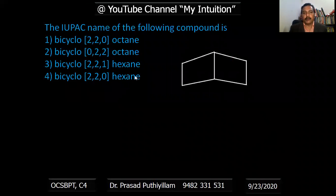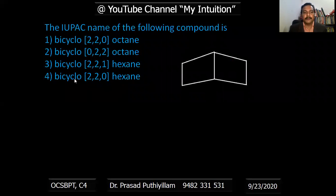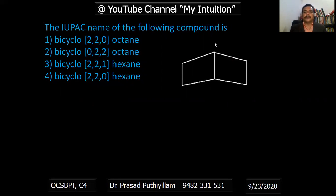First question: the IUPAC name of the following compound. The options are: bicyclo[2.2.0]octane, bicyclo[0.2.2]octane, bicyclo[2.2.1]hexane, or bicyclo[2.2.0]hexane. So how do we name this type of fused organic compound or bicyclo compound?